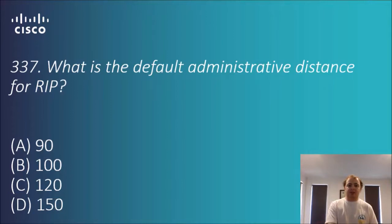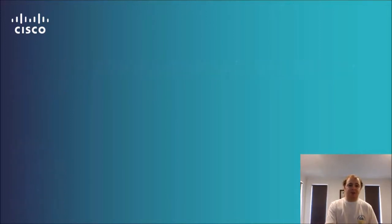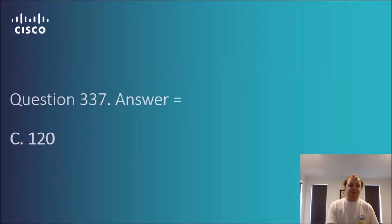Question 3.37: what is the default administrative distance for RIP? The options are 90, 100, 120, and 150. The answer is 120 — that is the default administrative distance assigned to RIP.